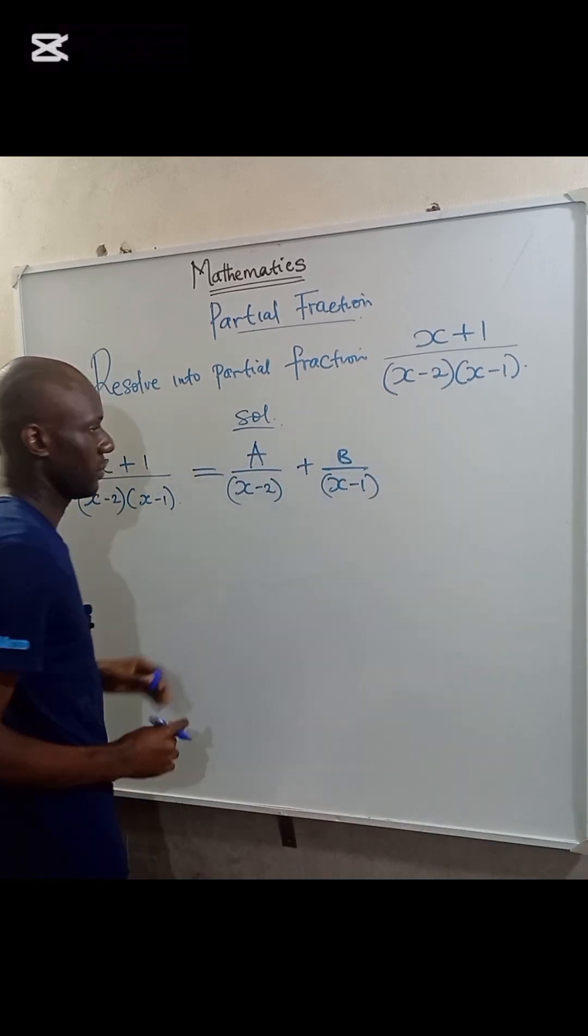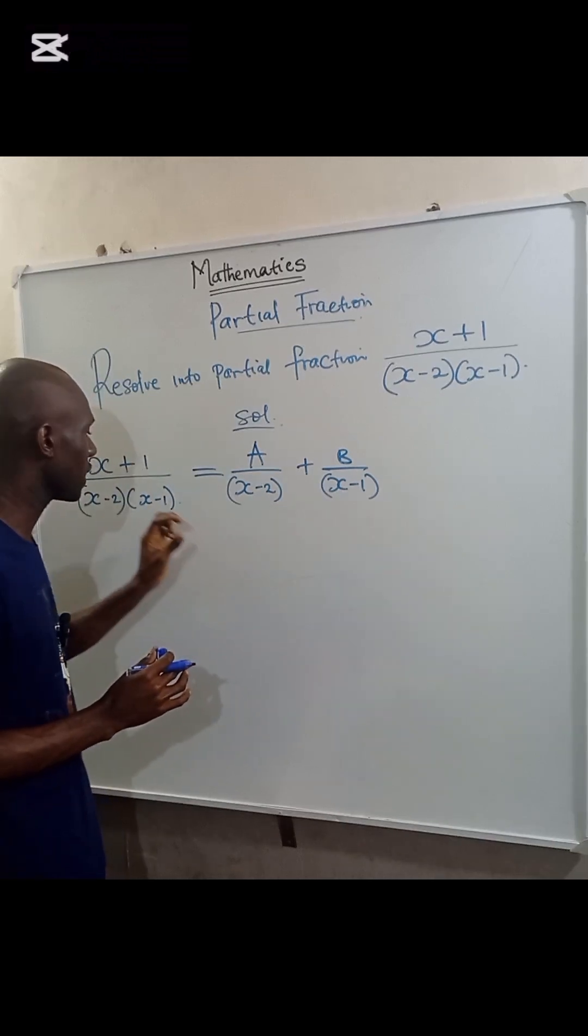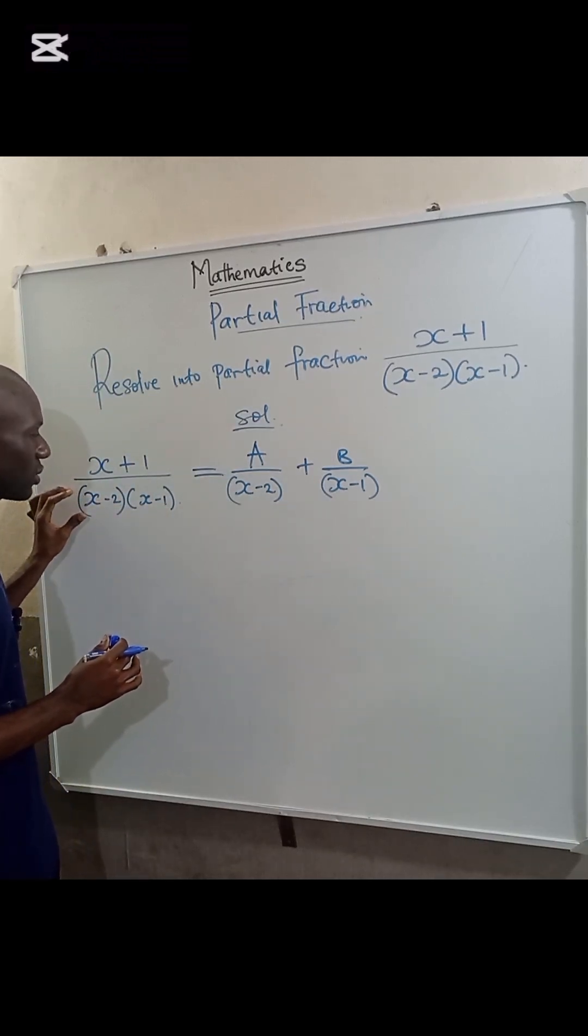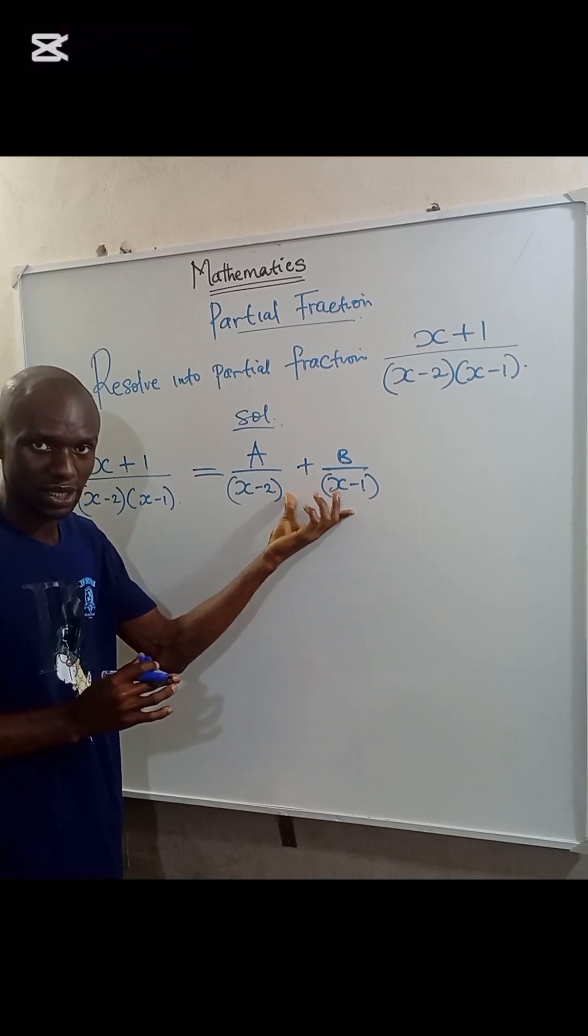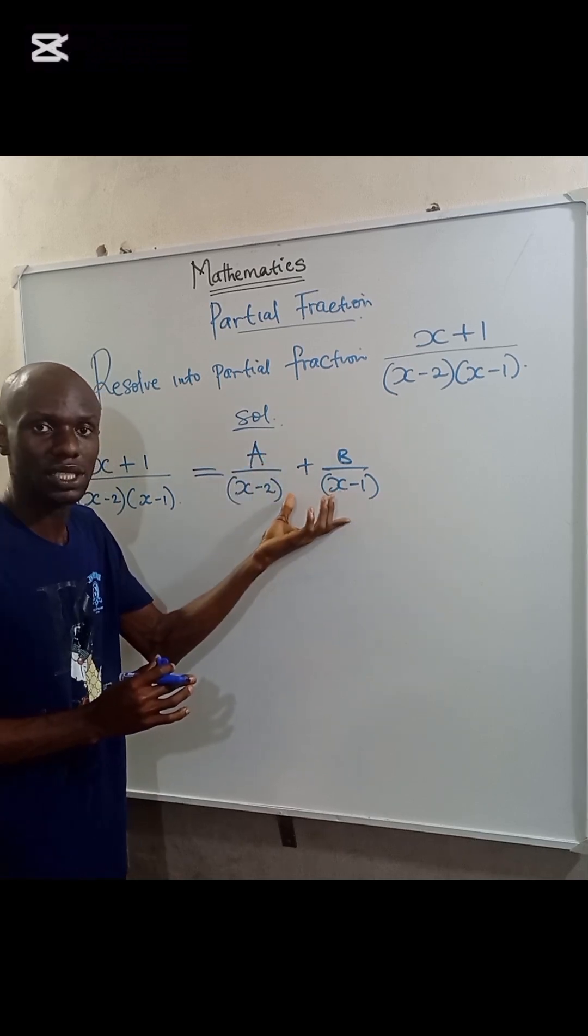A over (X-2) plus B over (X-1). Okay, so it is good I tell you that the expression in the denominator determines how the right-hand side is split into different components.